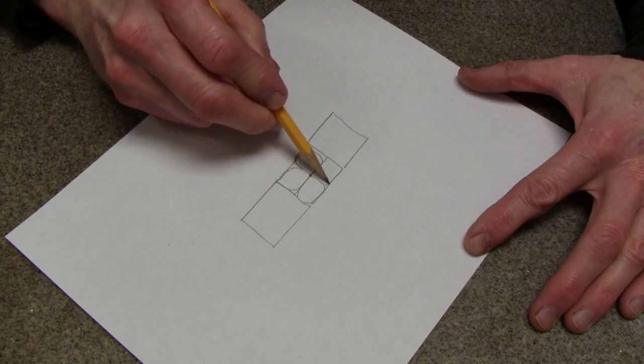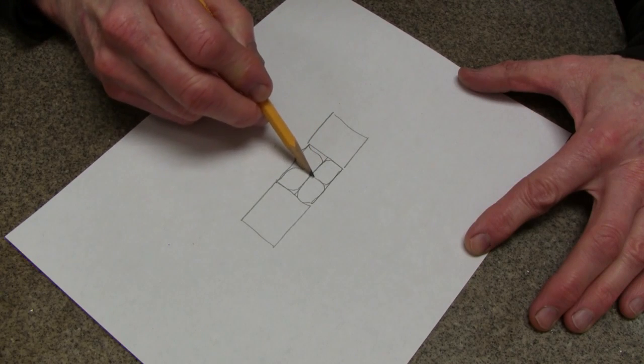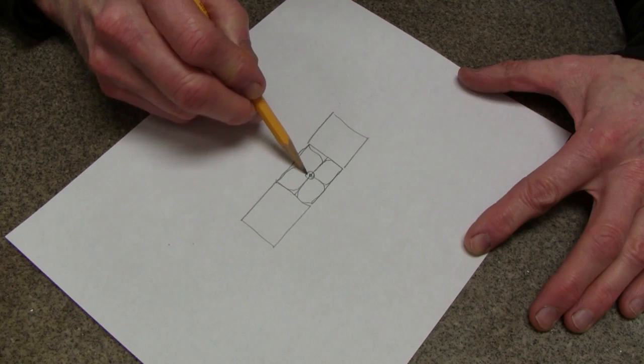Use the box as a framework. Come in and make the center of your flower a little bit bigger, and then you can shade that in.